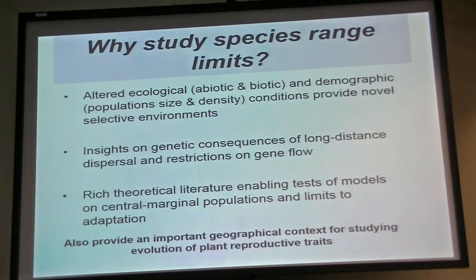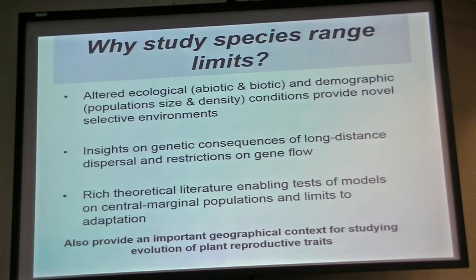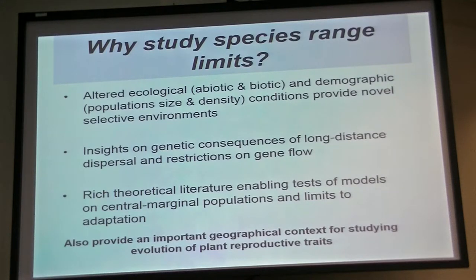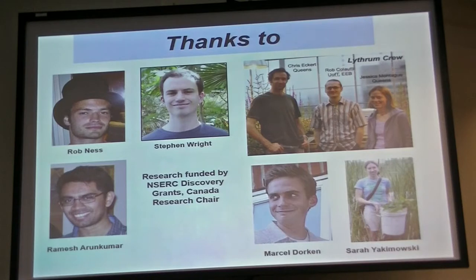What's nice about this field generally — although I won't be testing any of this specifically — is that there is a rich theoretical literature going back to Haldane and others who wondered about what happens at range limits. It's particularly good for plants because plants have tremendous intraspecific variation, especially relating to their reproductive systems. One of the rules for any student working with me is to do a good geographical sampling throughout the range in your first year, because you'll almost certainly find novel variability, particularly at range limits.